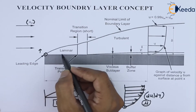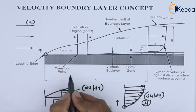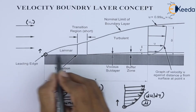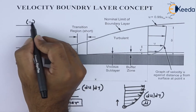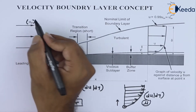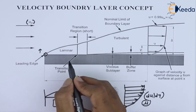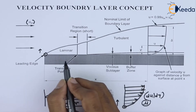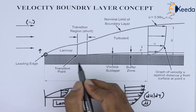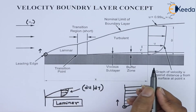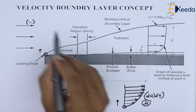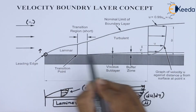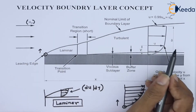One must understand that till a certain distance — and this will depend on u infinity — the flow can be laminar, transition, or turbulent. So similarly, the boundary layer can be drawn separately for these three cases.